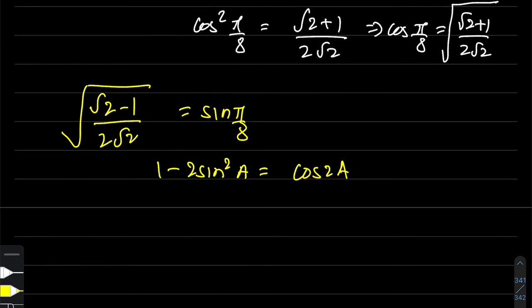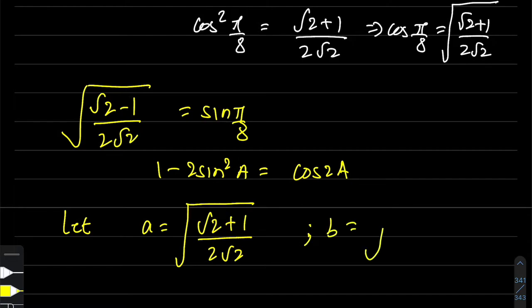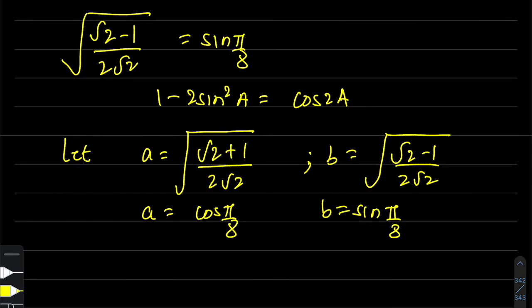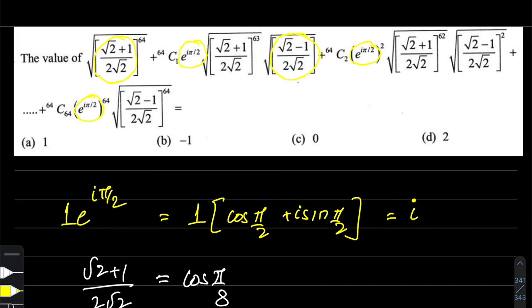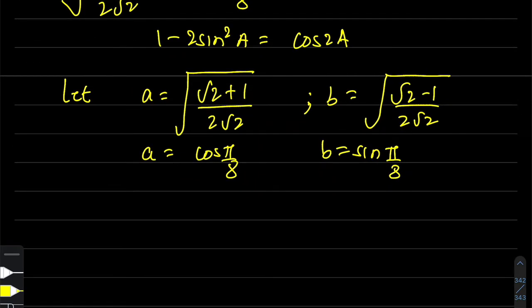Let us call a = √[(√2+1)/(2√2)] and b = √[(√2-1)/(2√2)]. We already know a = cos(π/8) and b = sin(π/8), but we'll come back to that later. If you see this expression, it's actually a^64, then ⁶⁴C₁·i·a^63·b, then ⁶⁴C₂·i²·a^62·b², and so on.